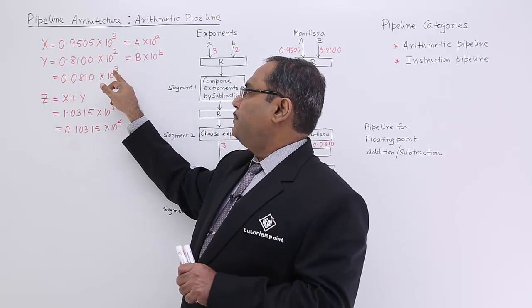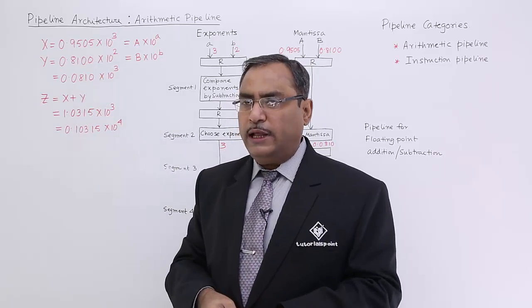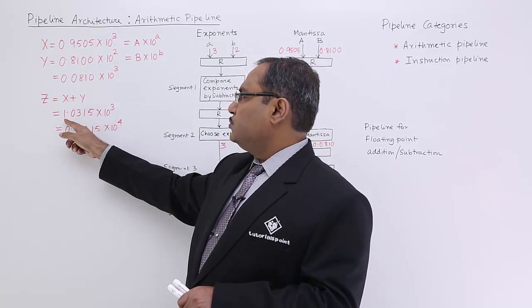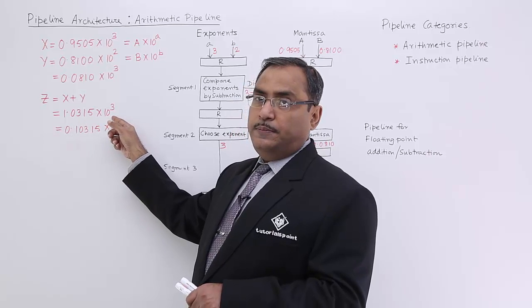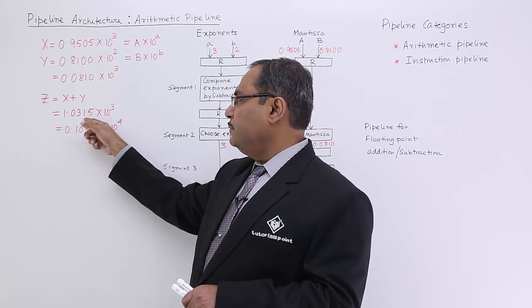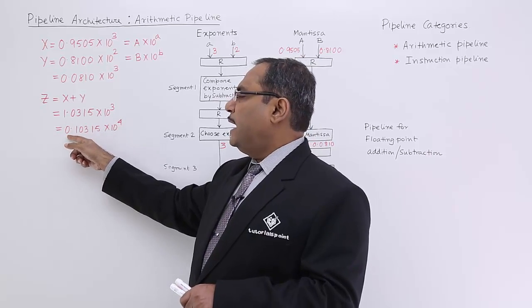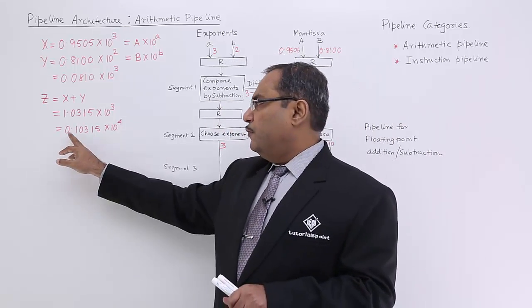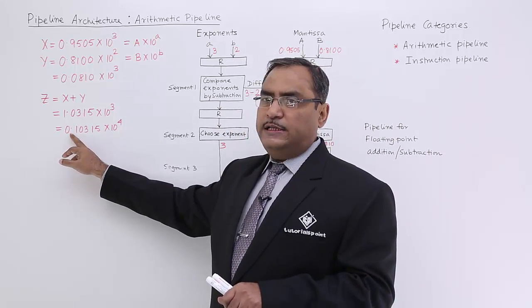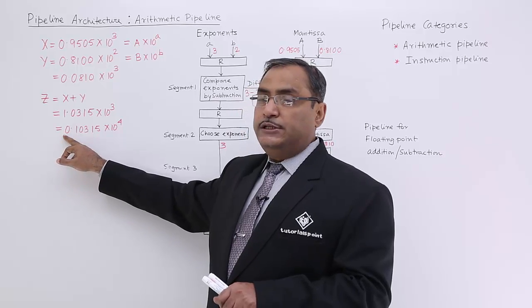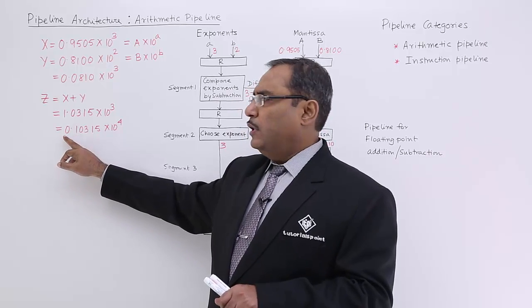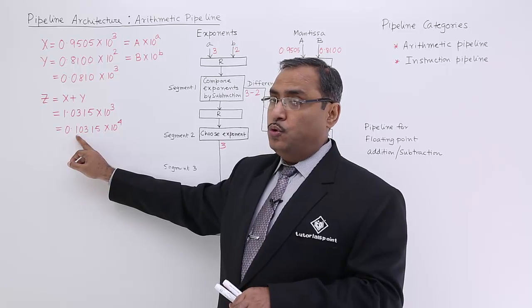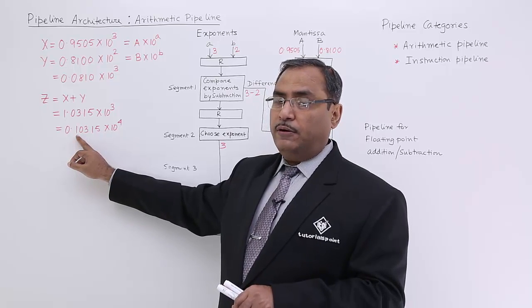Now the exponent parts are the same, so we can go for the addition. X plus y is computed and this is the addition result — the sum. Then I perform normalization. Normalization means before the radix point the digit will be 0, and after the radix point the digit will be non-zero. These two conditions are there for normalization.